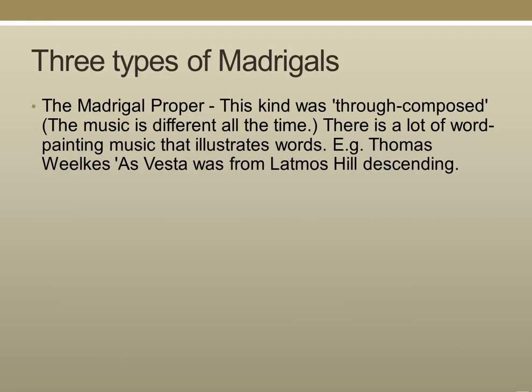There are three types of madrigals. First, the madrigal proper — this kind was through-composed, meaning music with no repeating sections. There is a lot of word painting, which is music that illustrates the words. For example, in Thomas Weelkes' 'As Vesta Was from Latmos Hill Descending,' when the text described going down the hill, the melody was actually a descending scale.